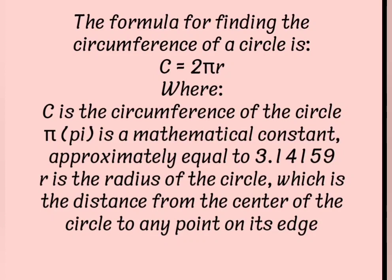Where C is the circumference of the circle, pi is a mathematical constant approximately equal to 3.14159, and r is the radius of the circle, which is the distance from the center of the circle to any point on its edge.